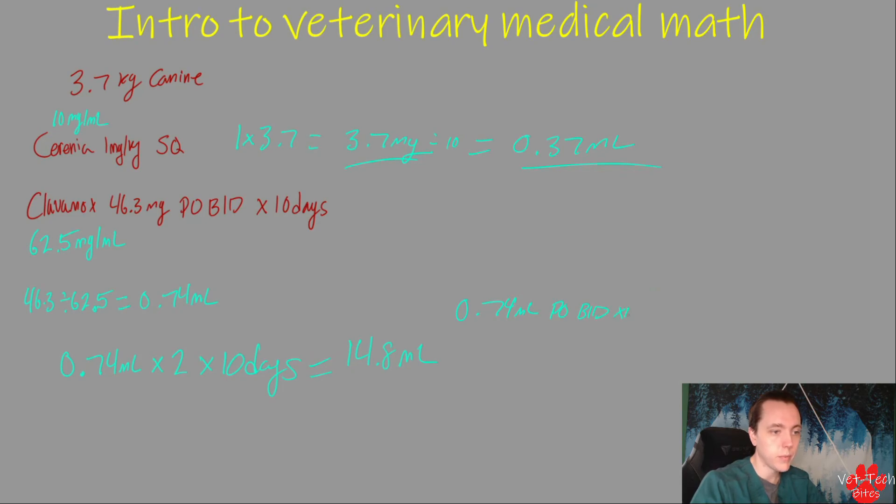So that's perfect, so our patient will get 0.74 mls PO BID for 10 days, dispense 14.8 mls, and it is that easy and now you're a pro. Alright, and that is it. Believe it or not, you're pretty much a pro at basic medical math now. So I hope you were able to take something away from this video. I had a lot of fun and I hope you did too. Don't forget to leave a like and comment down below, I really appreciate it, and also consider subscribing. I really appreciate it and that way you won't miss anything coming in the future. I'm Jared with Vet Tech Bytes, thank you so much for watching and I'll see you next time.